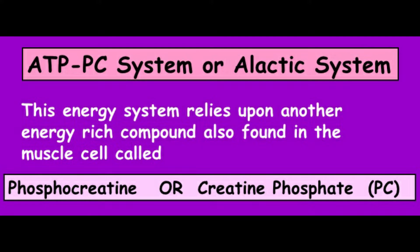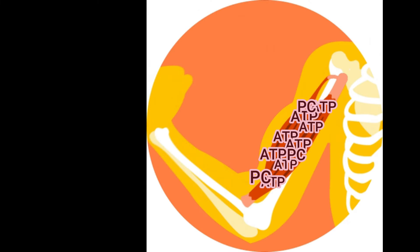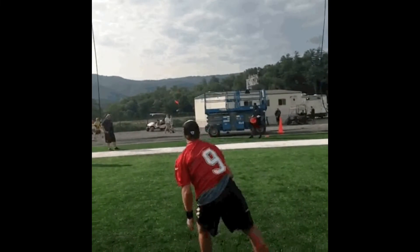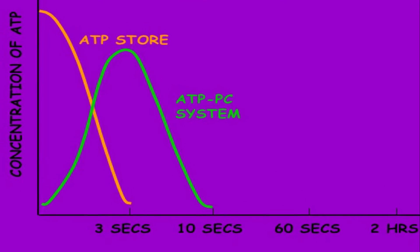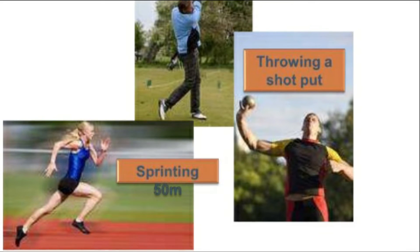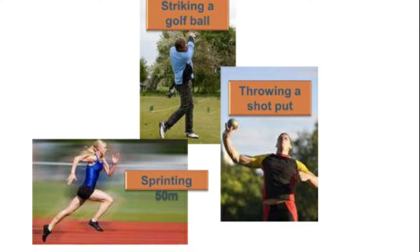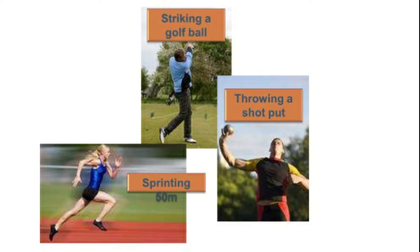The ATP-PC system, or alactic system, relies upon another energy-rich compound also found in the muscle cell, called phosphocreatine, or creatine phosphate. ATP-PC produces ATP quickly, since it utilizes the available ATP stored in the muscles and PC. It provides high bursts of startup energy that lasts around 10 seconds or less. Examples of physical activities using ATP-PC are striking a golf ball, throwing a shot put, or sprinting.